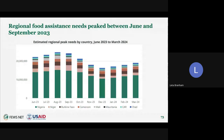FEWS NET prepares approximated humanitarian food assistance need estimates, and the estimated population in need in West Africa peaked between June and September of this year, ranging from 20 to 25 million people. This number is expected to decrease seasonally in line with the harvest, particularly between October and January. El Niño has not impacted food assistance needs in West Africa.